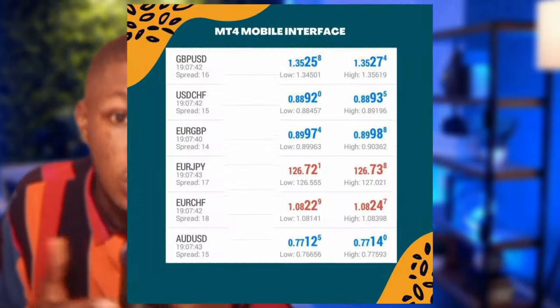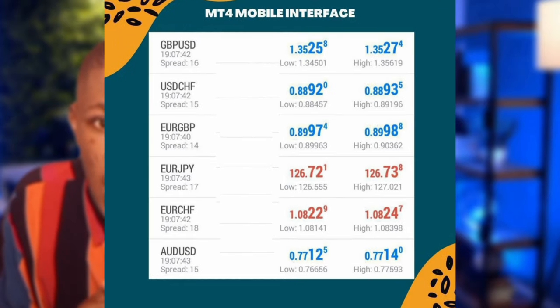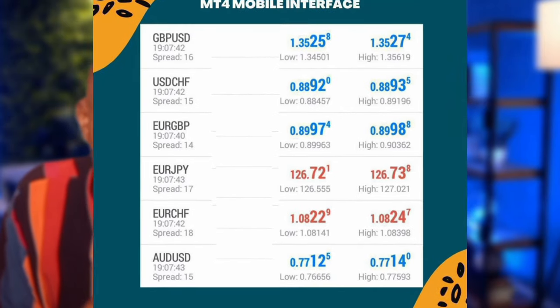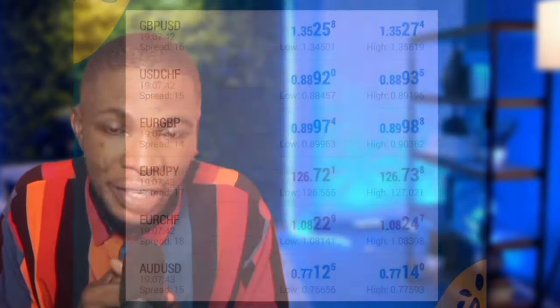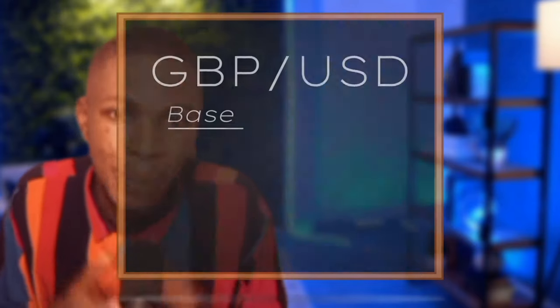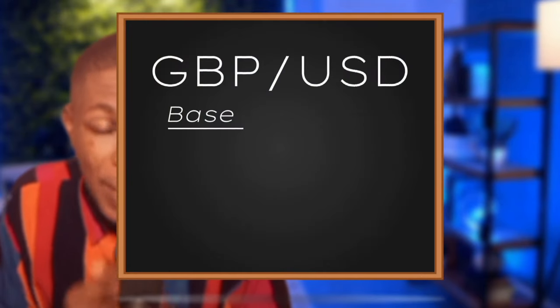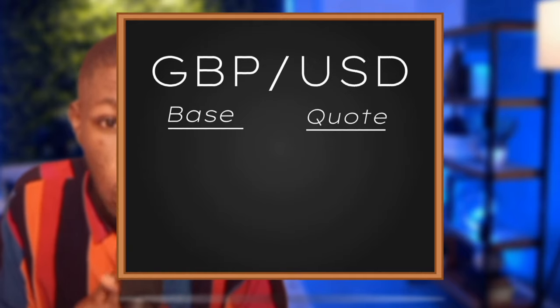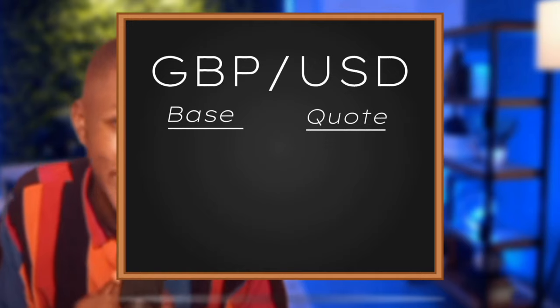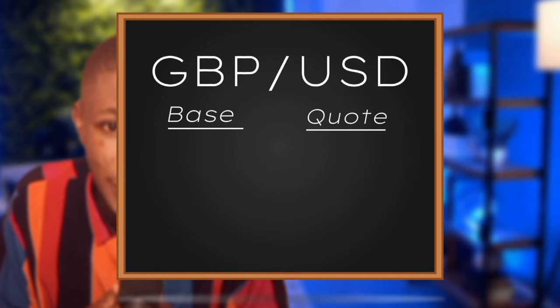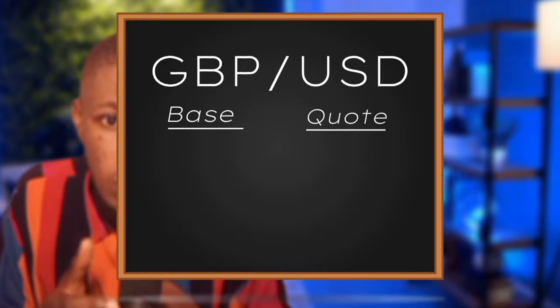If you look at these currencies listed here, you will discover that they are listed in pairs. Among those pairs, the first currency within the pair is called the base currency, while the second currency within the pair is called the quote currency. An important thing to note is that the base currency is stronger than the quote currency, with few exceptions — we will see why soon.